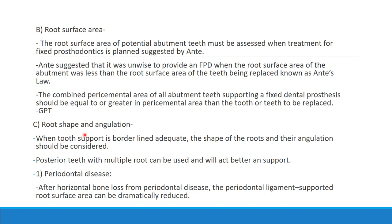Coming to root shape and angulation: when root support is borderline adequate, the shape of the root and the angulation should be considered. Posterior teeth with multiple roots can be used and will act with better support rather than single-rooted teeth. Coming to periodontal disease: after horizontal bone loss, the periodontal ligament-supported root surface area will be drastically reduced.